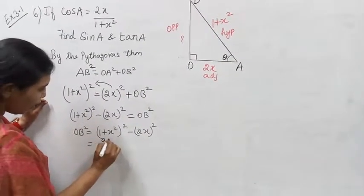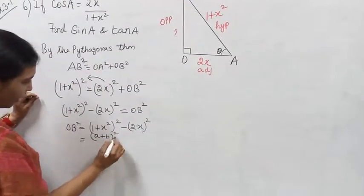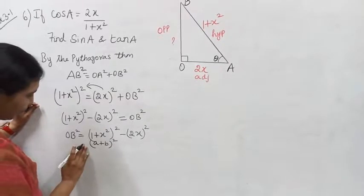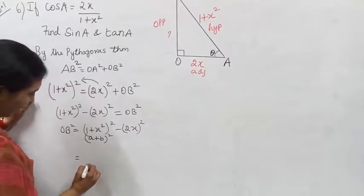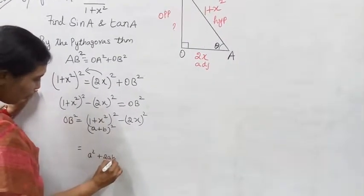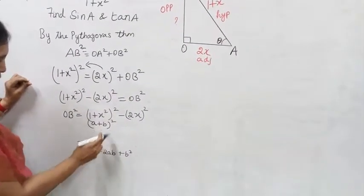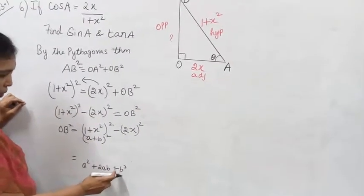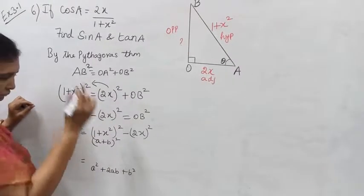Using the algebraic identity: (a plus b) whole squared equals a squared plus 2ab plus b squared. We expand (1 plus x squared) whole squared accordingly.